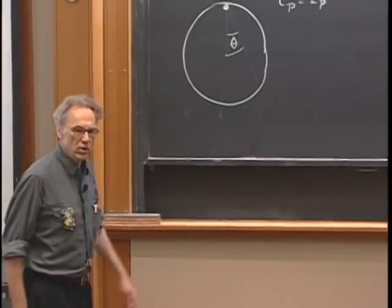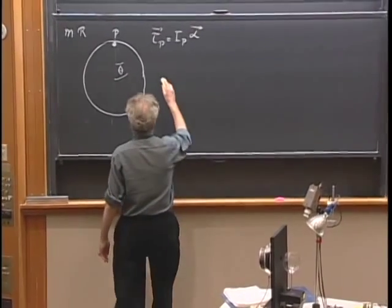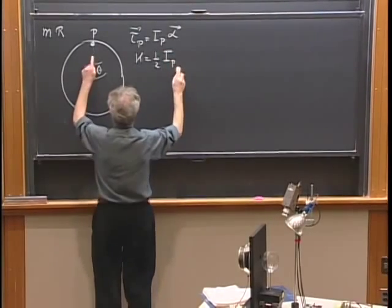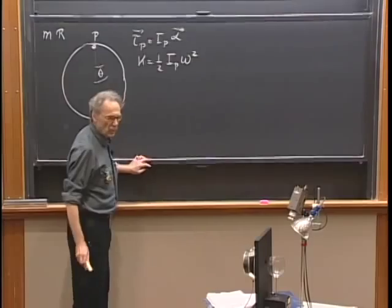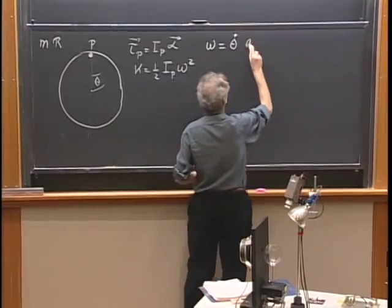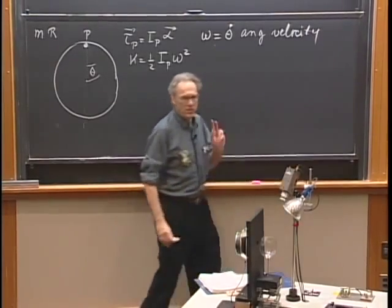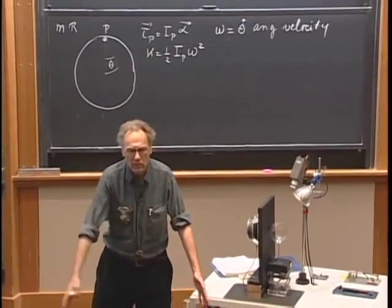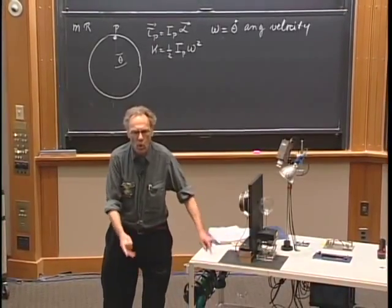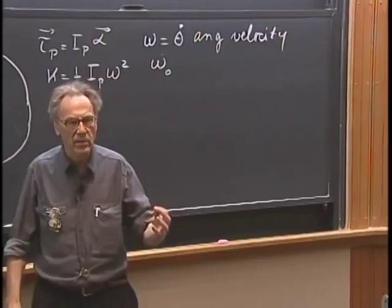If the thing is swinging, in general there are two components: kinetic energy and potential energy. The kinetic energy K is one-half times the moment of inertia about point P times omega squared. This omega is theta dot — the angular velocity. This angular velocity changes with time. When the object goes to equilibrium, the angular velocity is a maximum, and when the object comes to a hold, the angular velocity is zero. Do not confuse this omega with omega zero.